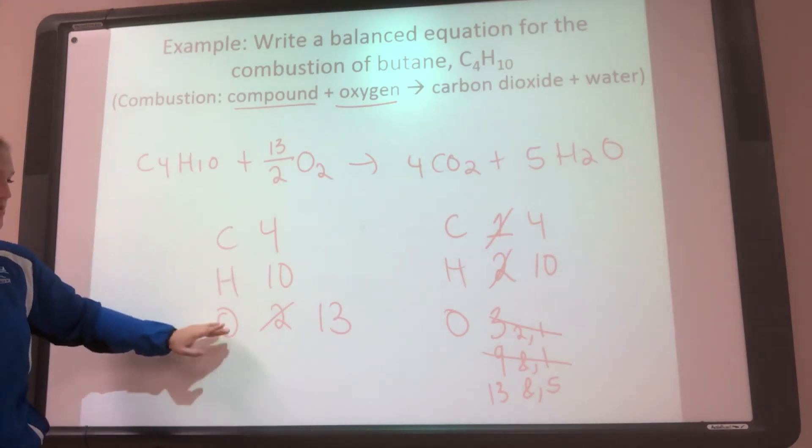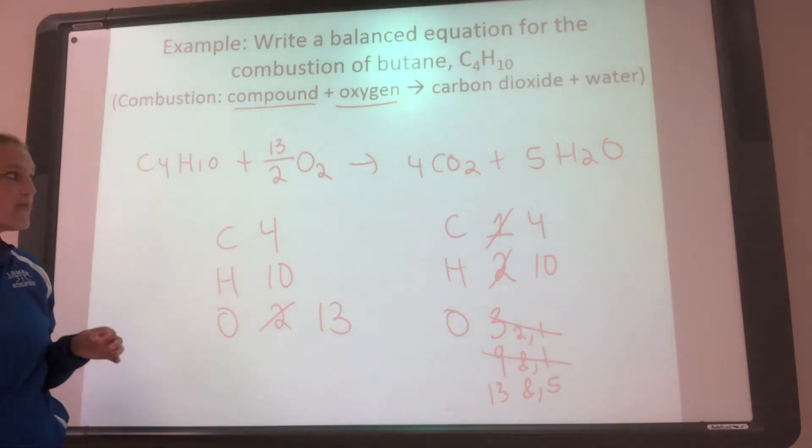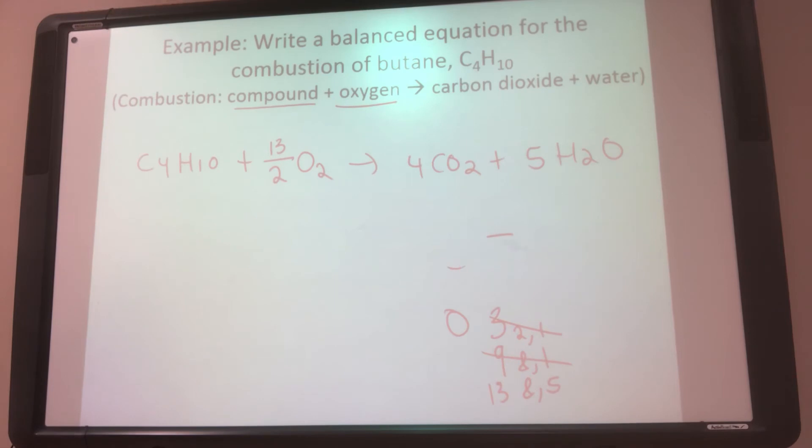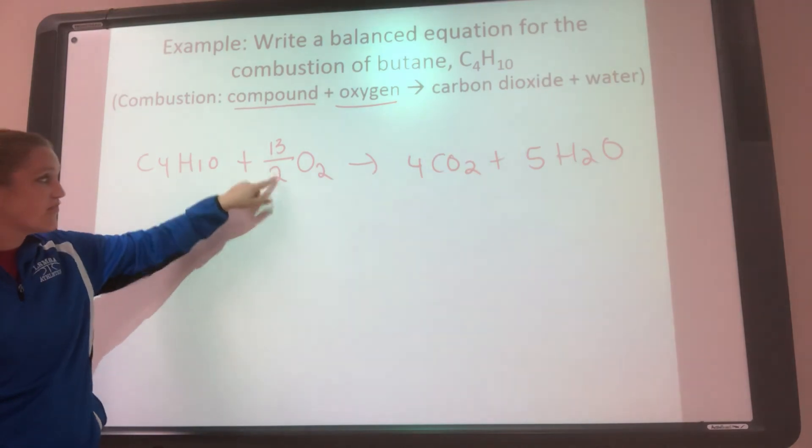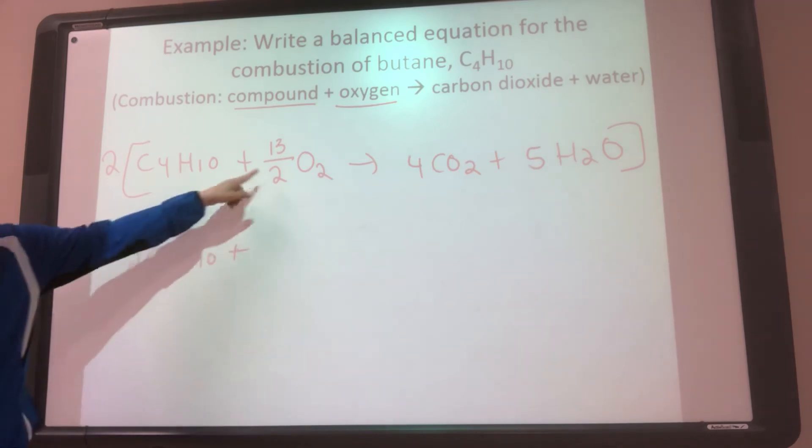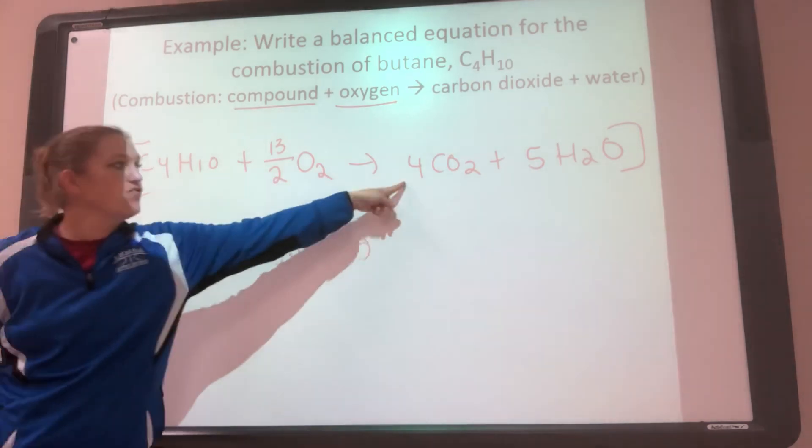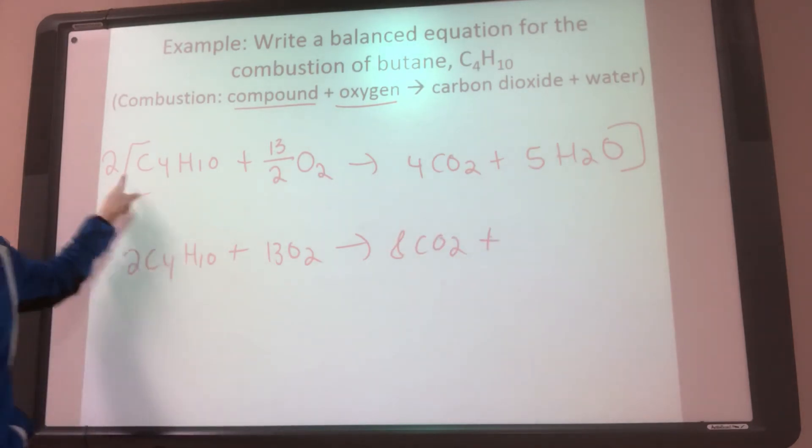So now I'm balanced. 4 carbons, 10 hydrogens, 13 oxygens. But I'm not done because I cannot have a fraction. You cannot leave your balanced equation with a fraction. So what you have to do now is multiply the entire equation by whatever this denominator is in your fraction. So if the bottom thing is 2, you're going to multiply everything by 2. So 2 times 1 gives you 2 C4H10. 13 halves by 2 give you 13 O2. 2 times 4 gives you 8 CO2. 2 times 5 gives you 10 H2O.